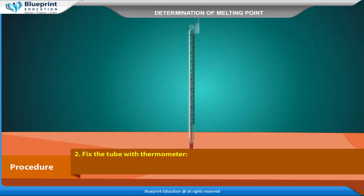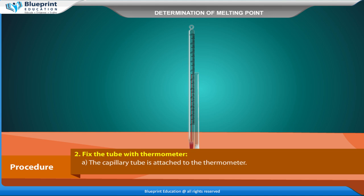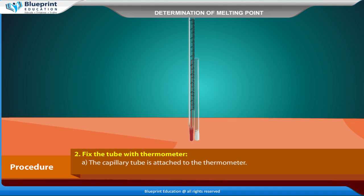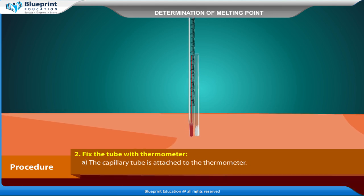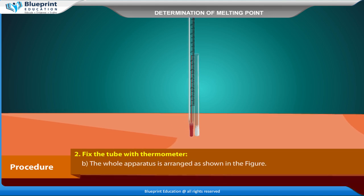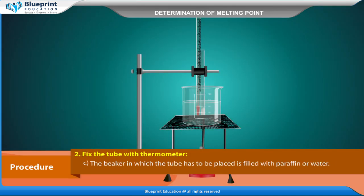Fix the tube with thermometer. A. The capillary tube is attached to the thermometer. B. The whole apparatus is arranged as shown in the figure.